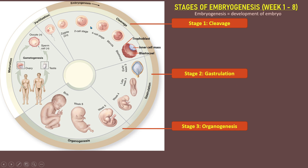In stage 1, cleavage occurs where the zygote undergoes mitosis to form 2 cells, then 4 cells, 8 cells, 16 cells, and 32 cells, until a morula is formed. Morula is a solid ball packed with cells. This cleavage process occurs between day 1 to day 3. Morula then develops into blastocyst, which is a hollow ball with a sphere structure of trophoblast cells, an inner cell mass, and a cavity filled with fluid known as blastocoele. The blastocyst is completely developed at day 7, where it reaches the uterus and implants into the endometrium wall.